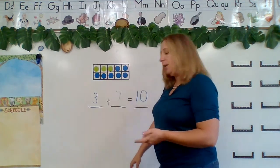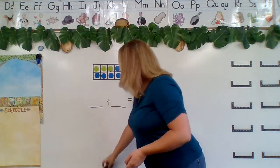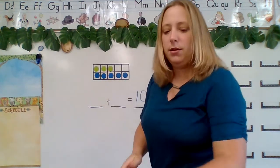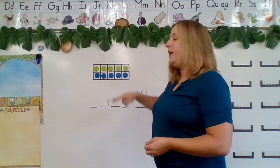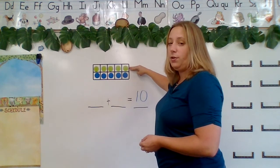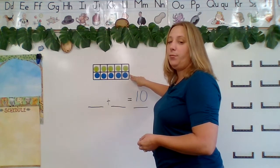All right, I'm going to erase my 3. I'm going to erase my 7. And I'm going to change it up a little bit. Oh look, we have the top row, which is 5 green. And the bottom row, we have 5 blue.